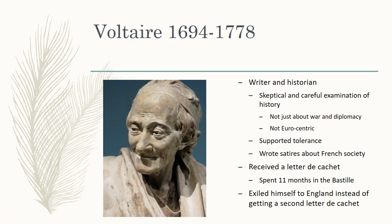One of his poems was a grand epic poem in which he tried to imitate the Roman poet Virgil. His subject was Henri IV, and he depicted him as a national hero, mainly because of his passing of the Edict of Nantes — that religious tolerance edict we saw. When he wrote his histories, he wrote them using a very skeptical and careful examination of events and details. He would try to sort out what actually happened versus what were just stories people had made up. He really wanted to get to the truth.